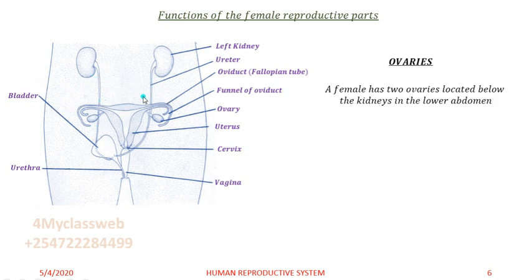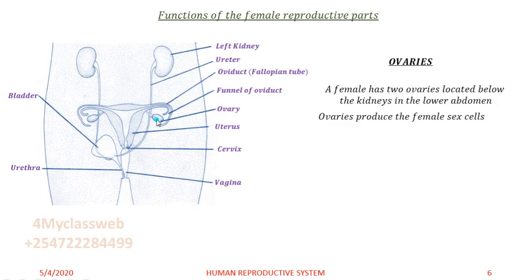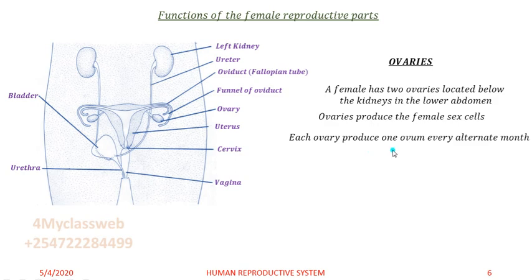A female has two ovaries, as you can see here. They are located below the kidneys in the lower abdomen — one on the left, the other on the right. The ovaries normally produce the female sex cell, which we call ova.